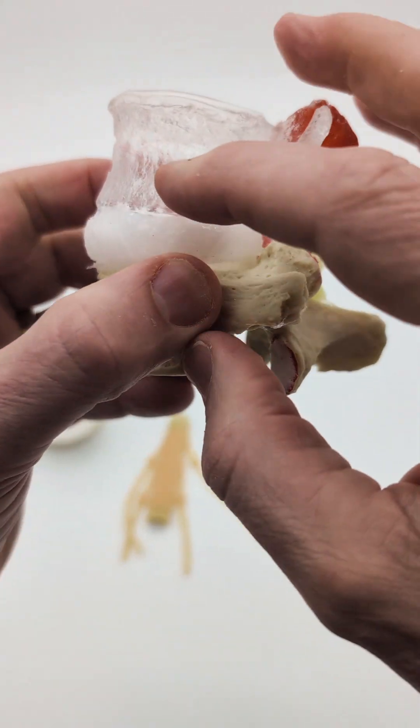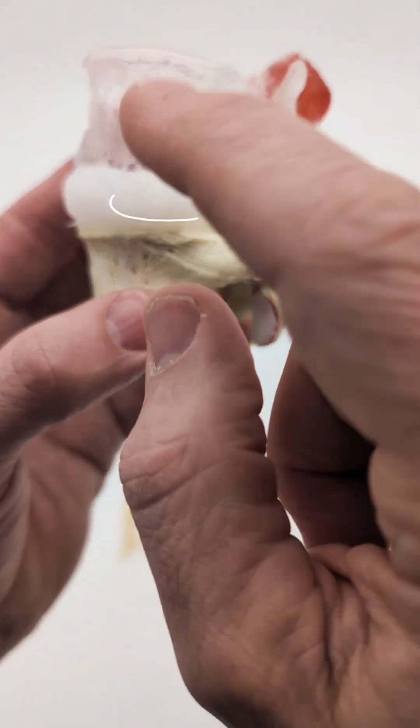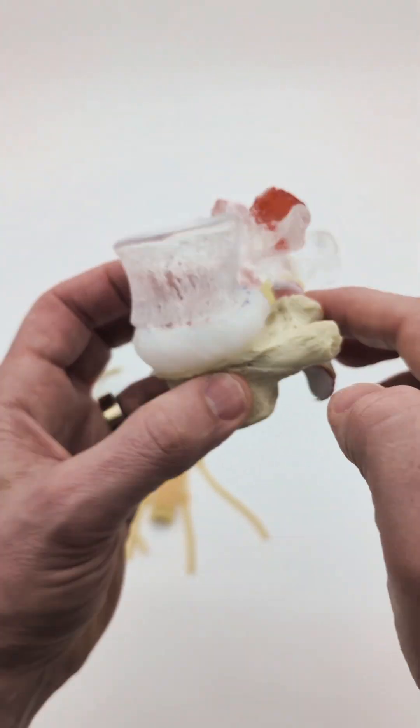What happens over time is the disc height can be lost. The disc height loses its height, which will have an impact on both the disc as well as the ligamentum flavum.